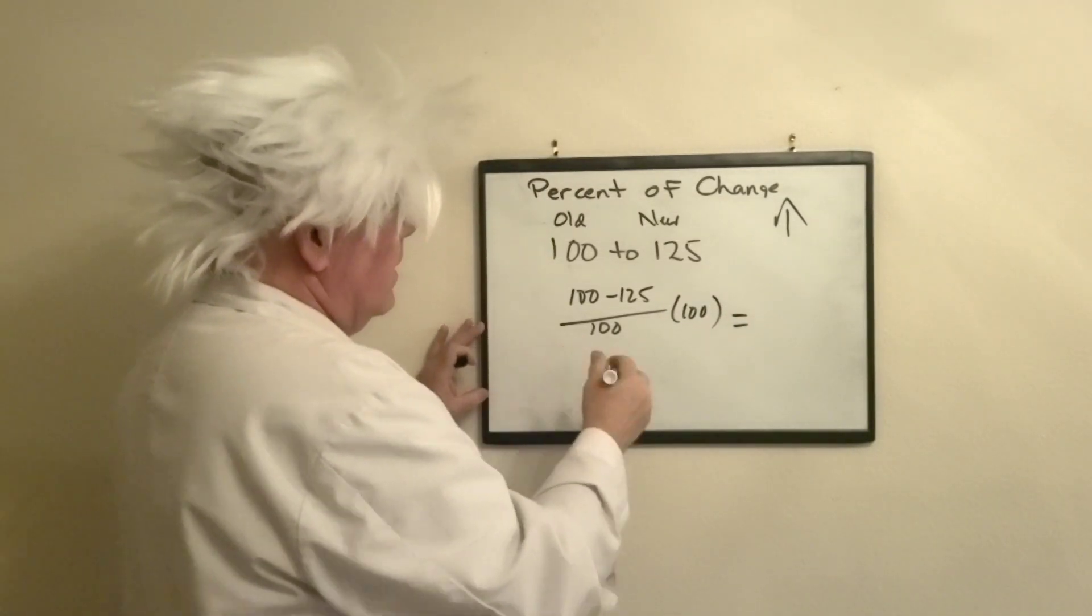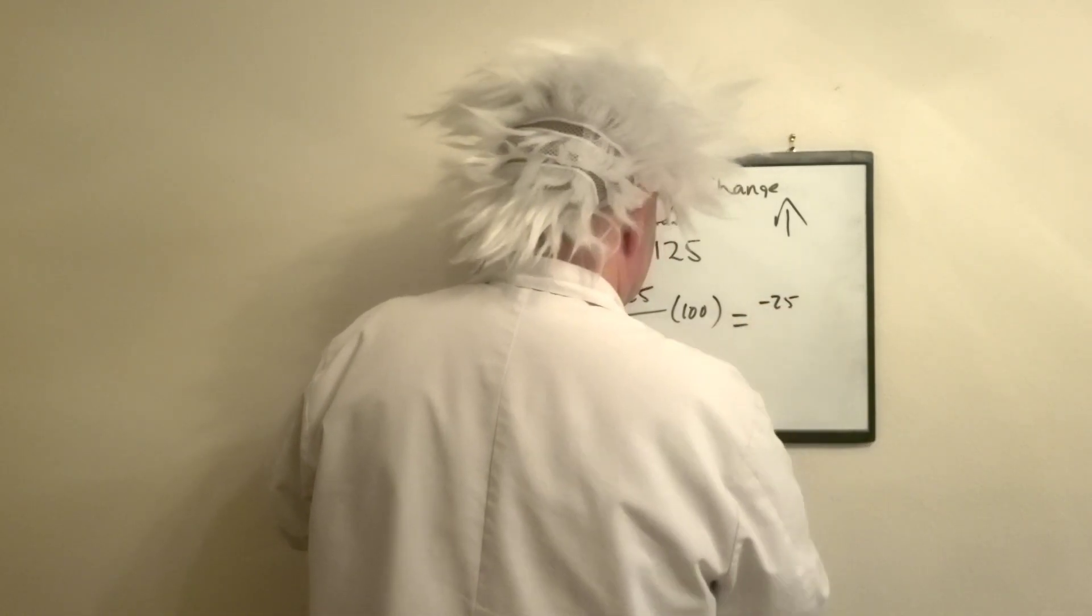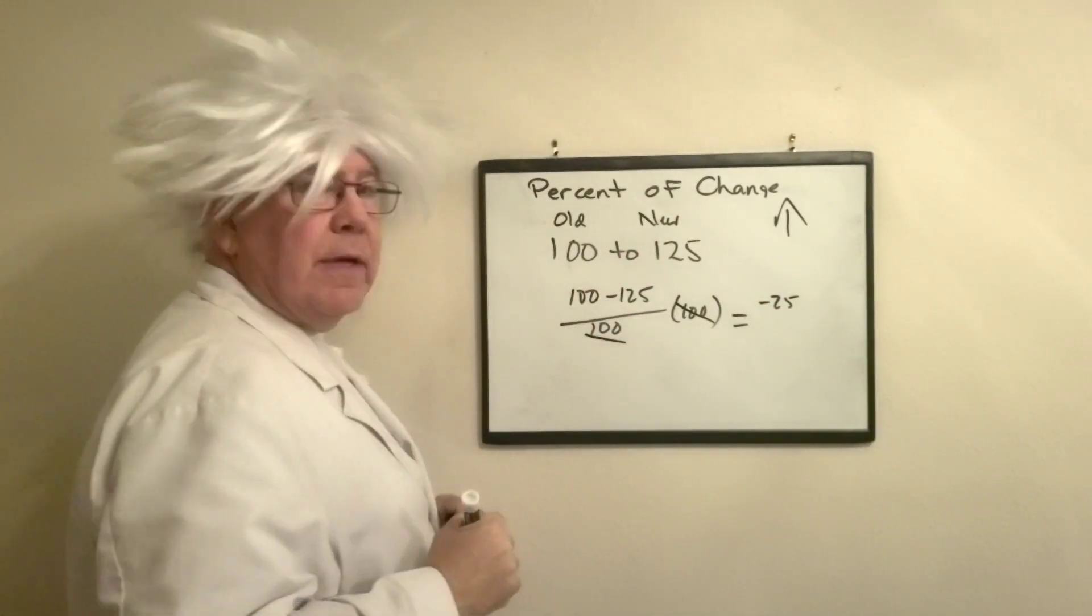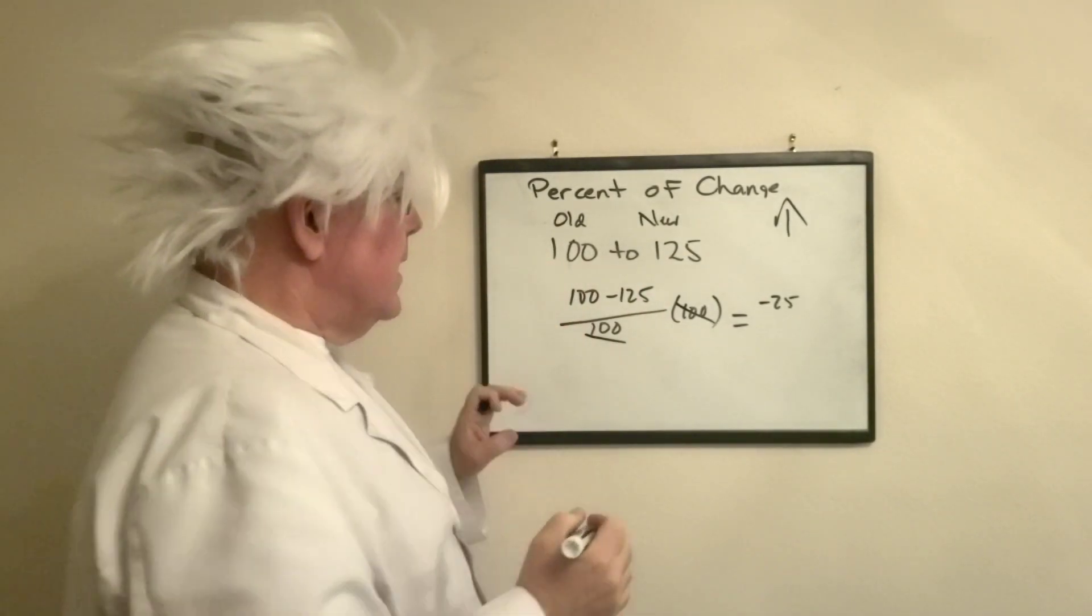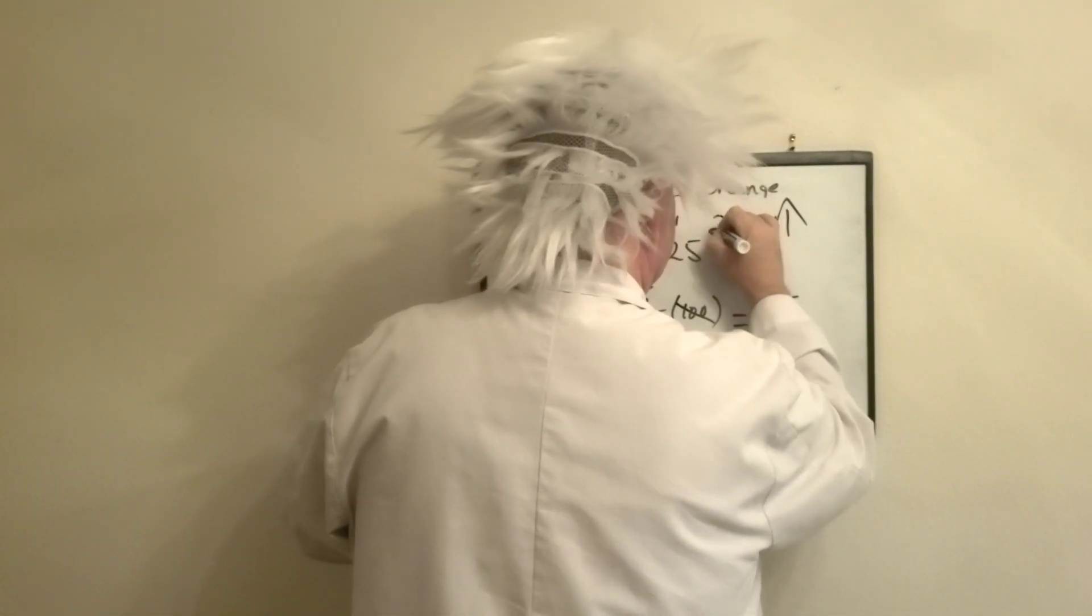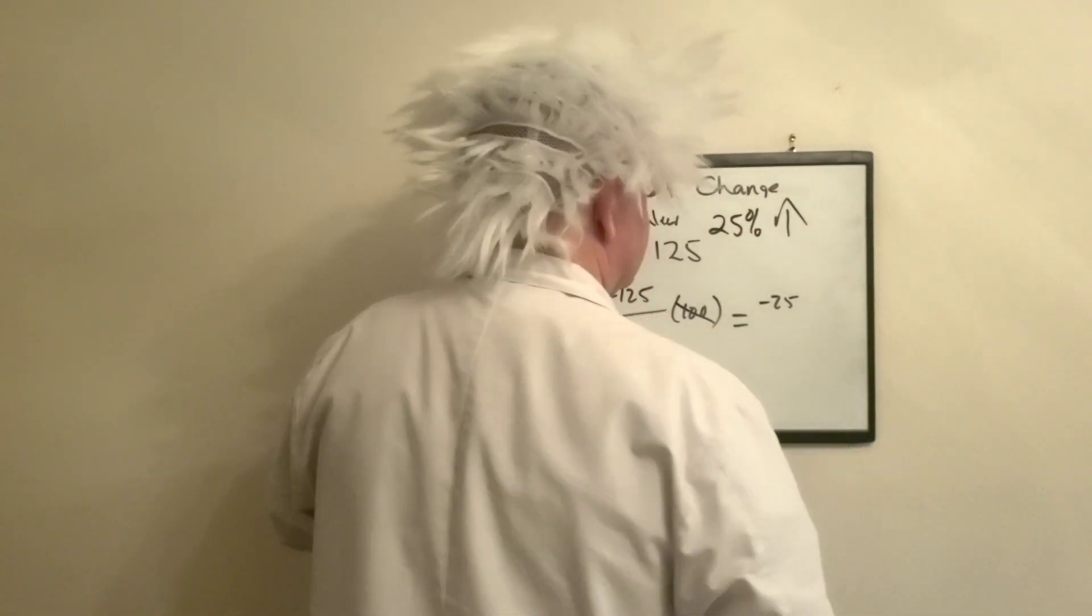This is going to give me negative 25 because those cancel out. Negative 25, remember what we said: if it's a negative value, it's going to be an increase. So this is a 25% increase.